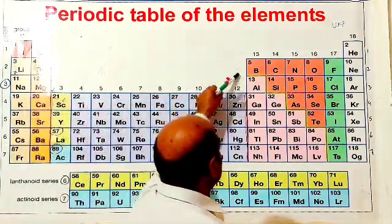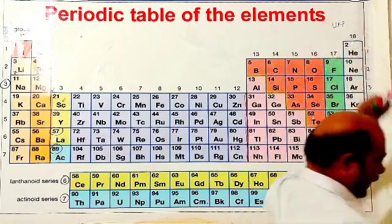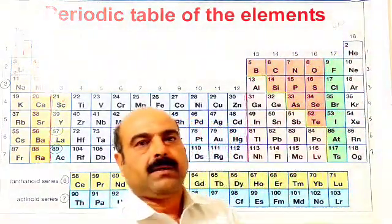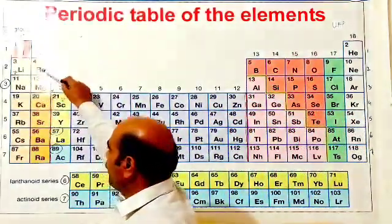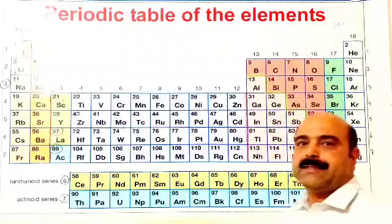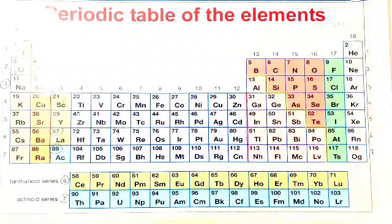The first two groups, group number 1 and group number 2, these are called s-block elements because during electronic configuration the last electron enters into s subshell.